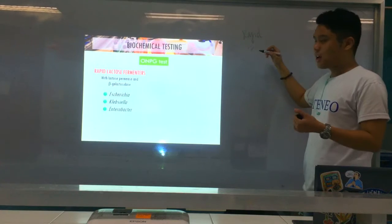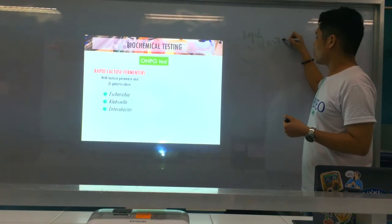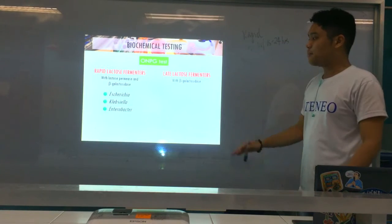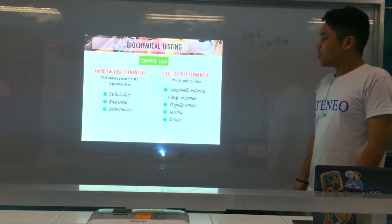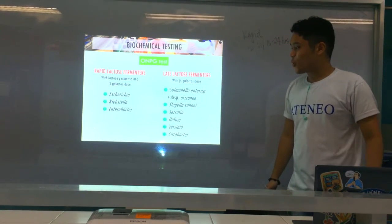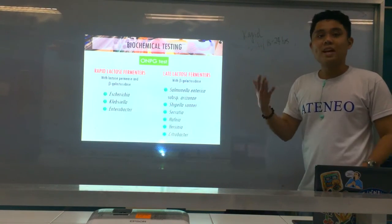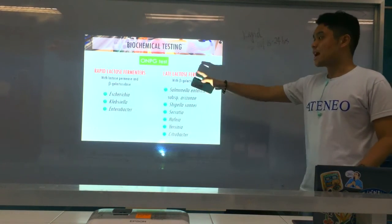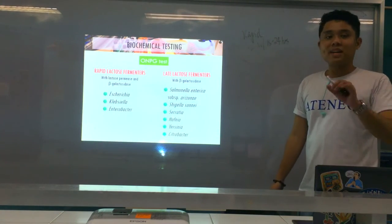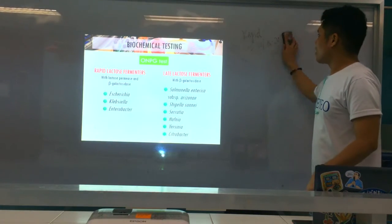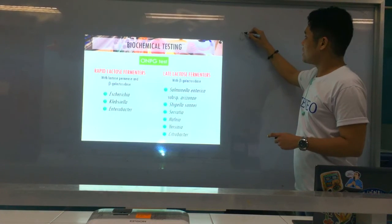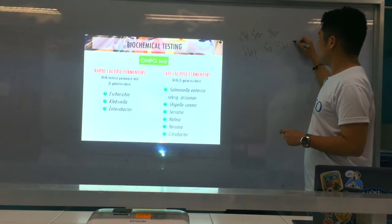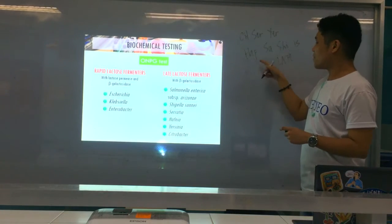Rapid lactose fermenters ferment lactose within about 18 to 24 hours because they have two enzymes. Late lactose fermenters only have one enzyme — beta-galactosidase — and include Salmonella, Shigella sonnei, Serratia, Hafnia, Yersinia, and Citrobacter. The mnemonic for late lactose fermenters is: 'Sit, sir, your half sashi is late' — Citrobacter, Serratia, Yersinia, Hafnia, Salmonella enterica subsp. Arizonae, and Shigella sonnei. Credits to Ma'am Vanessa of Lamar.